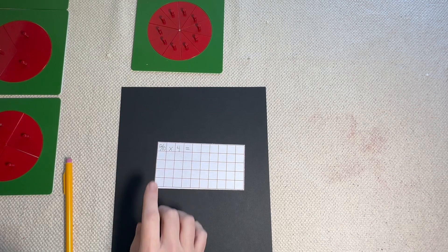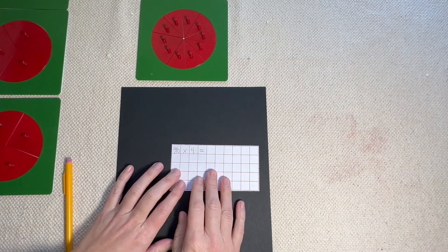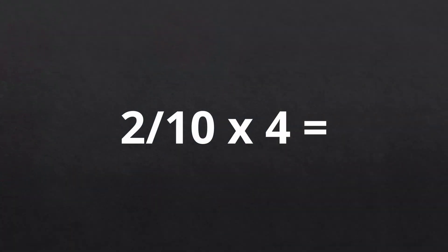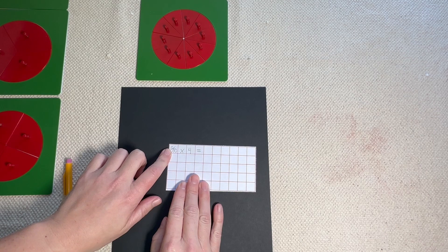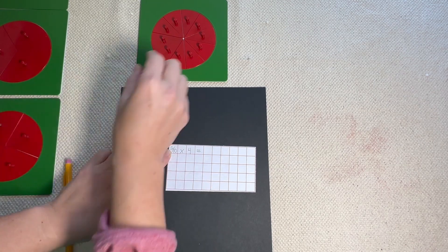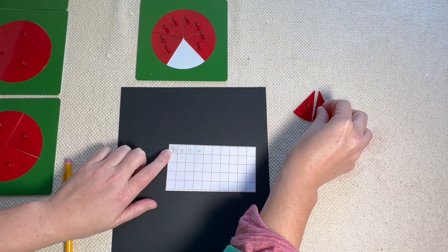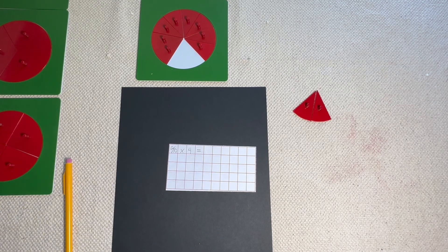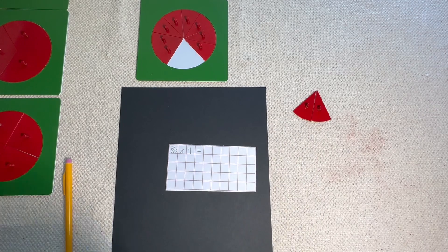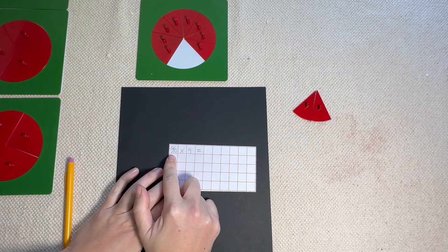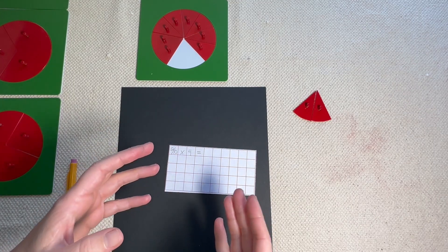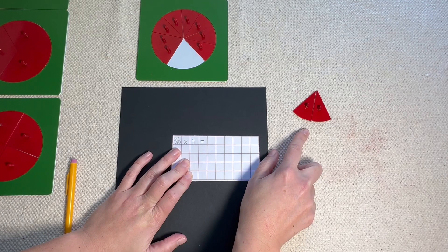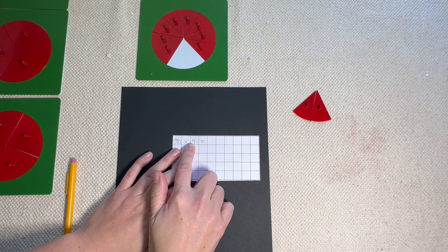Now let's move on to multiplication. And this time, let's work with the family of the tenths. Here's the family of the tenths right here. Now let's take a look at our equation — it says 2/10 times 4 equals. Now we know we're working with the family of the tenths, and this top number tells us how many we're working with — it says 2, so let's count out 2: 1, 2. Now because we're doing multiplication, we have to figure out how many times we need to build the number 2 from 2/10. What is multiplication? It's when we have one number and we build that exact same number over and over a certain amount of times. This top number tells us how many we're working with — 2 — and the 4 tells us how many times we're going to build it.